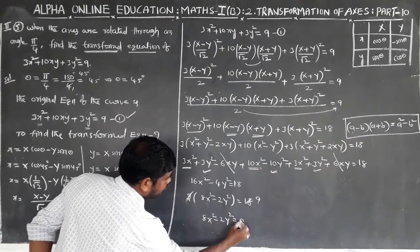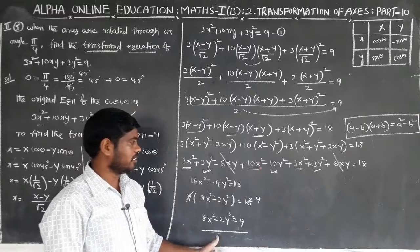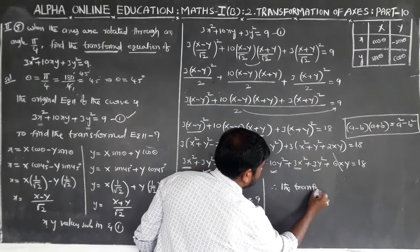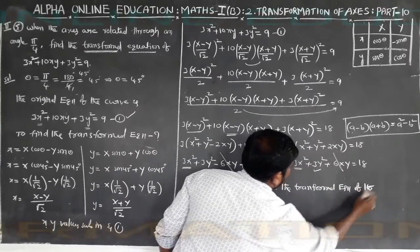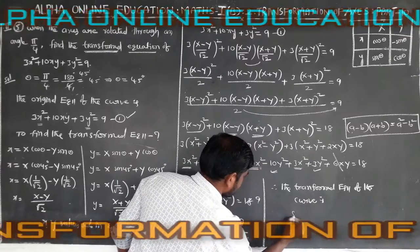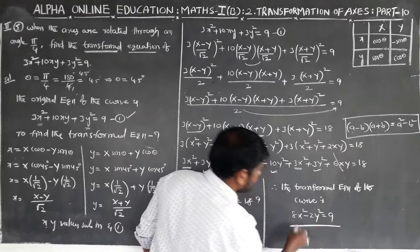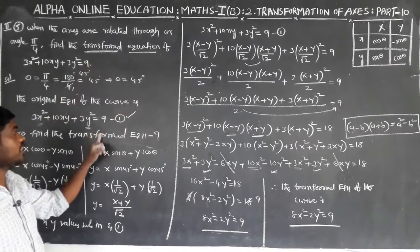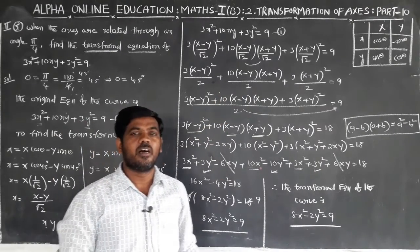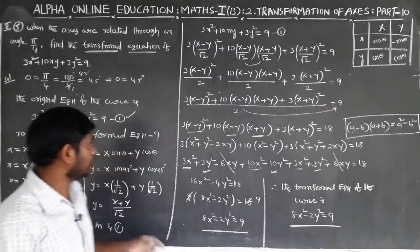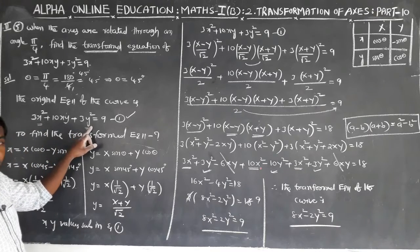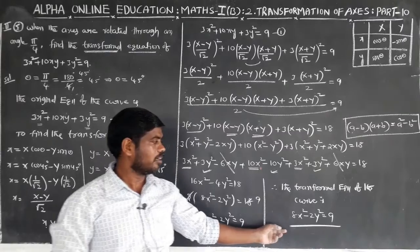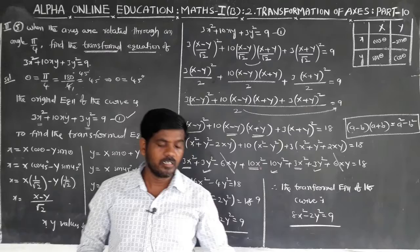Therefore, the transformed equation of the curve is 8X² − 2Y² = 9. Given the rotated angle and the original equation of the curve in terms of small x and small y, we found the small x and small y values, substituted into equation number 1, and simplified to get the transformed equation.